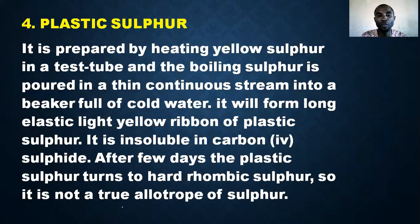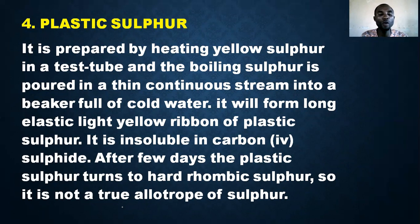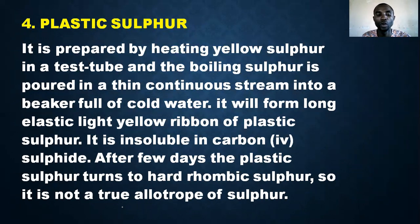The next allotrope is plastic sulfur. It is prepared by heating yellow sulfur in a test tube until it boils, then pouring the boiling sulfur in a thin continuous stream into a beaker full of cold water. This forms long, elastic, light-yellow ribbons of plastic sulfur. It is insoluble in carbon disulfide. After a few days, the plastic sulfur turns to hard rhombic sulfur.